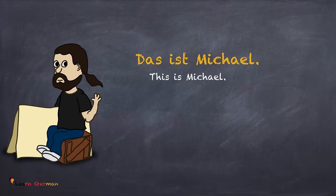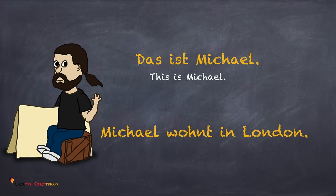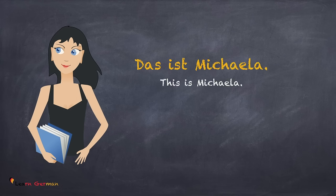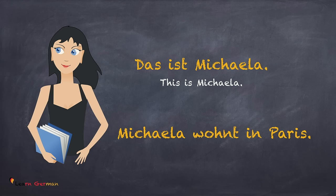Now let's see how to use these pronouns. Das ist Michael. Michael wohnt in London. We have learned that pronouns are used to avoid the repetition of nouns. Hence, you would say: Er wohnt in London. Let's do another example. Das ist Michaela. Michaela wohnt in Paris. And with the pronoun, the sentence would be: Sie wohnt in Paris.